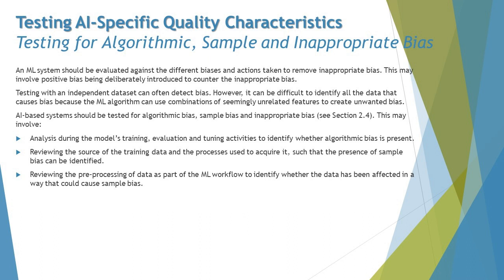The second step involves reviewing the source of the training data and the processes used to acquire it, so that sample bias can be identified. The source of training data is very important because the data could be outdated, irrelevant, or repeated. We need to be very careful about what the source is and how relevant that data is.